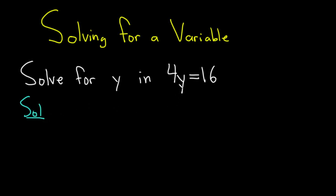If we're trying to find the value of y in this equation, we have to get the y by itself. Because it's being multiplied by a 4, we can undo that multiplication by using division. So I'll put a line here and put a 4. And what you do to one side, you do to the other — you have to divide both sides of the equation by 4.